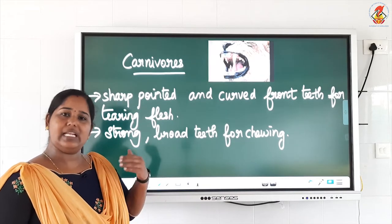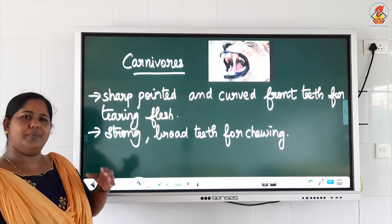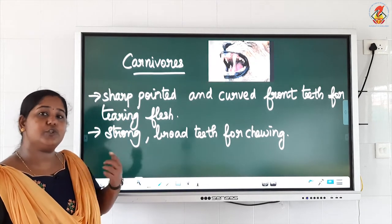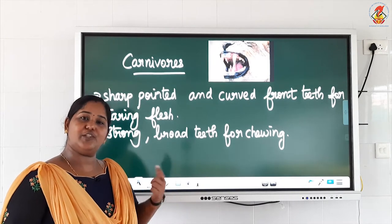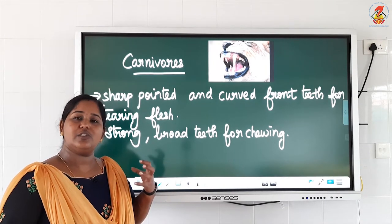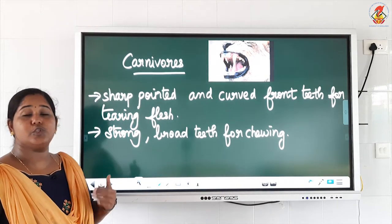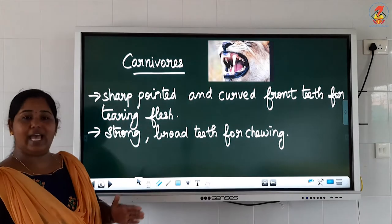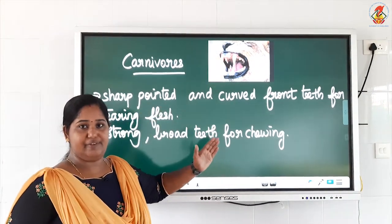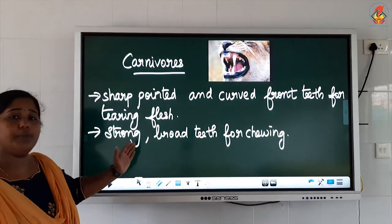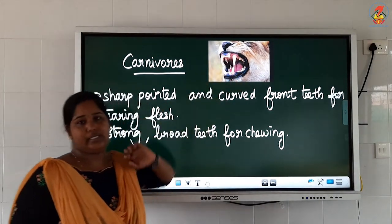Just like herbivores, carnivores also have strong grinding teeth, because it is very difficult to chew the flesh of animals — chicken and all is very difficult to chew. So you need strong broad grinding teeth to chew the flesh. Carnivores have sharp pointed and curved front teeth for tearing flesh and strong broad teeth for chewing food — tearing teeth and chewing teeth.